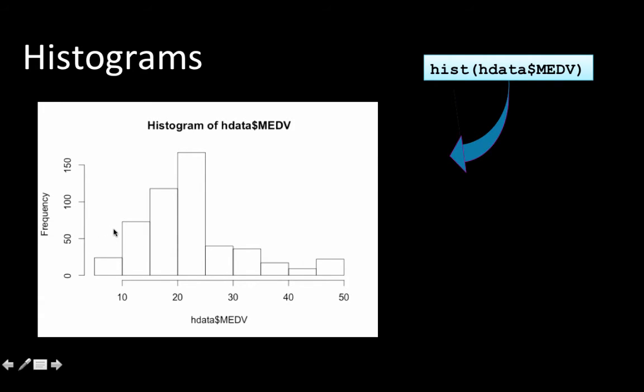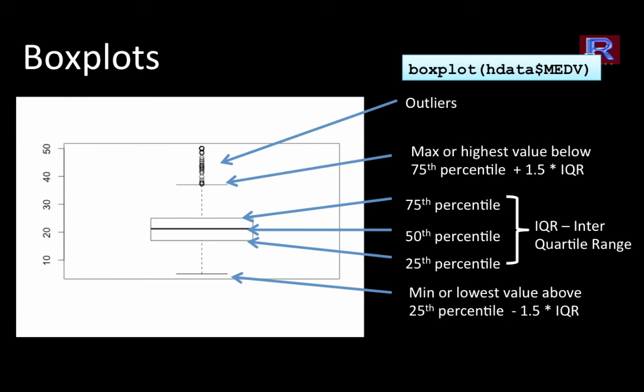This is telling you that roughly 75 values fall between 10 and 15, roughly 120 values fall between 15 and 20, and roughly 170 or 75 values fall between 20 and 25 and so on. This is giving you a pictorial idea of how the values are distributed. That's a very useful thing in visualizing our data. That is a histogram.